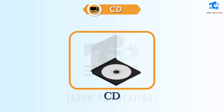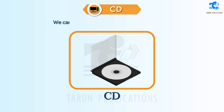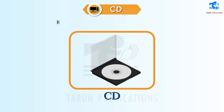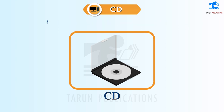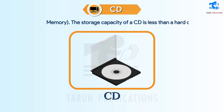CD: CD stands for Compact Disk. It is round in shape. We can store songs, movies, games and information in it. It is also known as CD-ROM, Compact Disk Read Only Memory. The storage capacity of a CD is less than a hard disk.